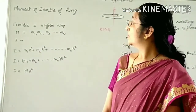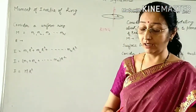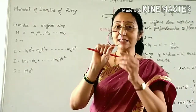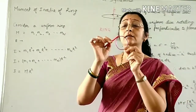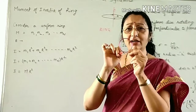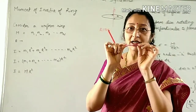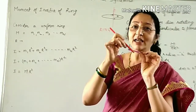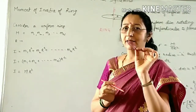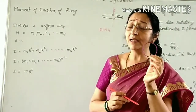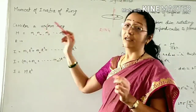Hello friends, we are going to discuss the moment of inertia of a ring. This is the ring and this is the mass. It is a very thin ring, nearly two-dimensional, and its mass is evenly distributed everywhere. Let M be the mass of the ring and R be the radius of the ring.